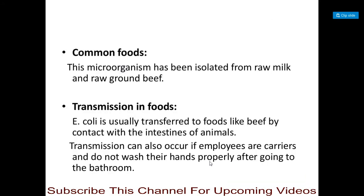The common foods involved with E. coli O157:H7 are raw milk and raw ground beef. This Escherichia coli is usually transferred to foods like beef by contact with the intestine of animals. Transmission can also occur if employees are carriers — meaning they harbor the bacteria without showing symptoms — and do not wash their hands properly after going to the bathroom, thus contaminating the food.